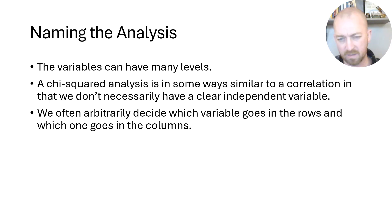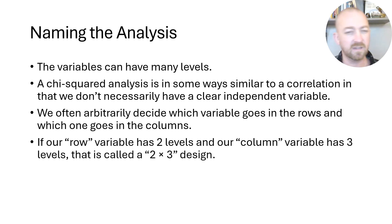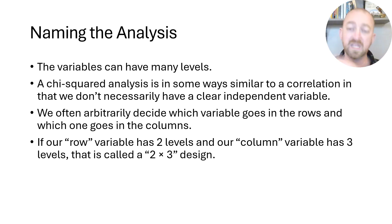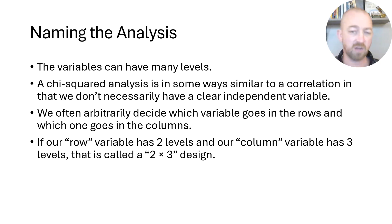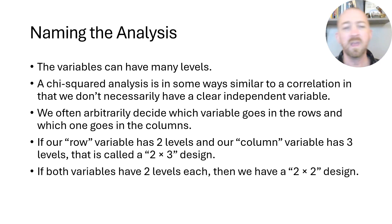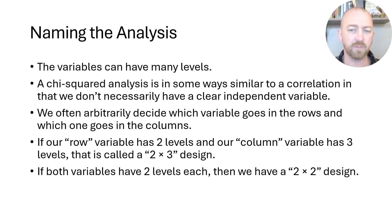Unless there's clearly some kind of chronology to when the variables were introduced and when the other was measured, sometimes we can't infer directionality. However, we can name the design based on which variable we're using as the rows and which one we're putting in the columns. So if the variable in our rows has two levels and the variable in the columns has three levels, we call this a two-by-three design. If both variables have only two levels, we have a two-by-two design.